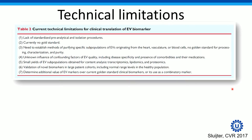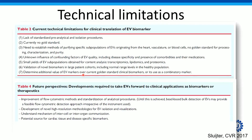Also, things like the unknown influence of confounding factors, and the additional value of EV markers on top of the golden standards — that's why I brought the troponin with the microRNAs on top of that. There is some gain to get there, but we still have to be careful because in the clinic there are already a lot of things available.